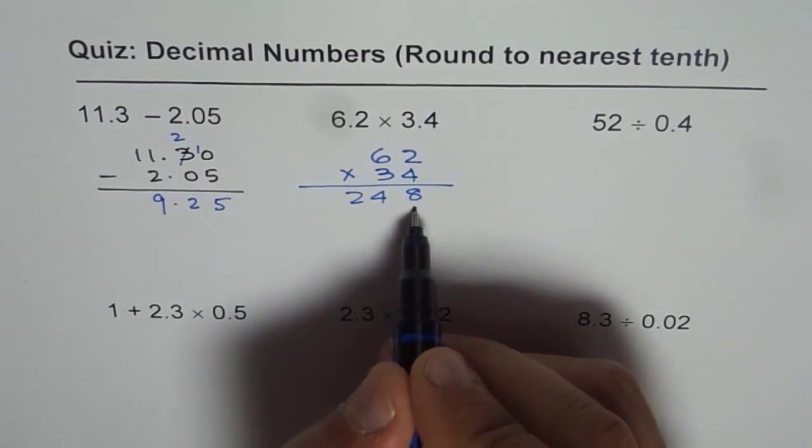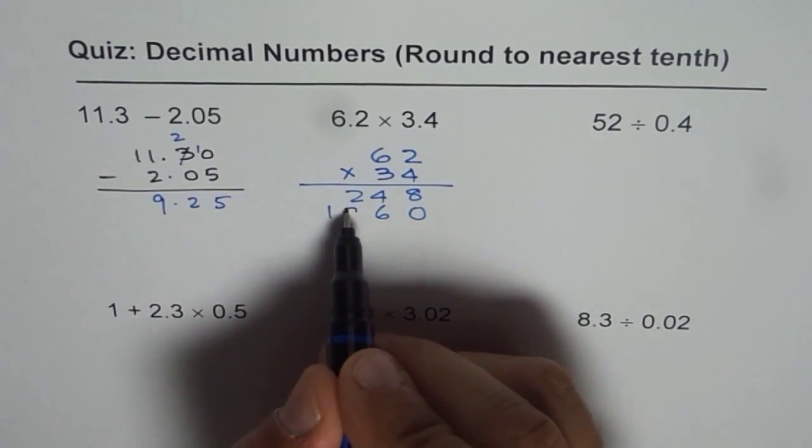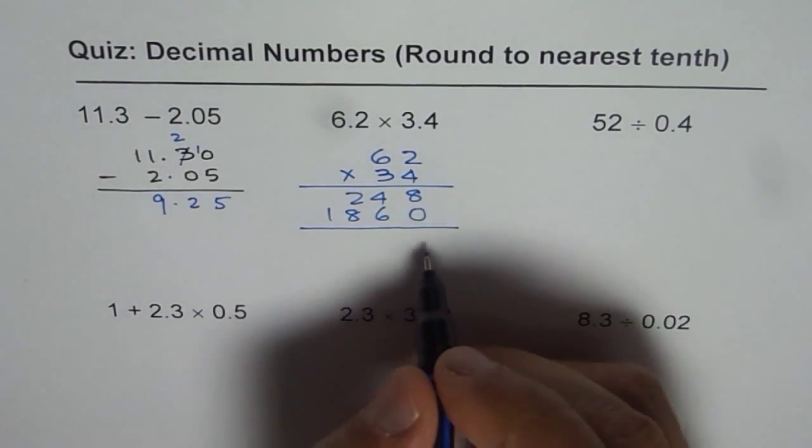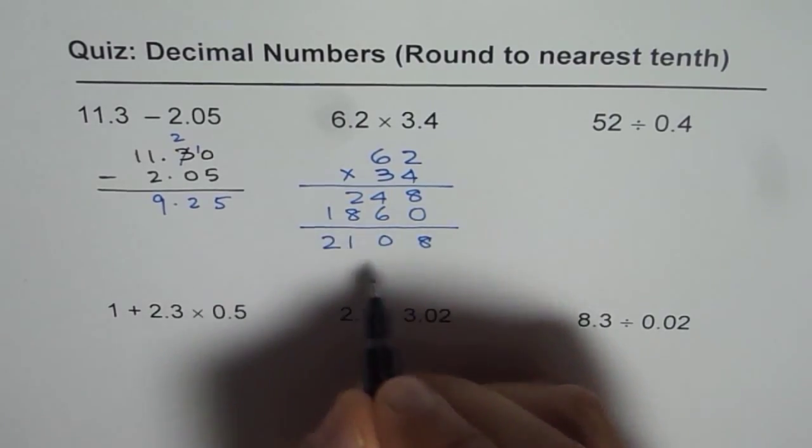Now 3 is 30, so put 0 here. 3 times 2 is 6, 3 times 6 is 18. Add them up. So we get 8, 10, 10, 11, 2, 1, 0, 8.